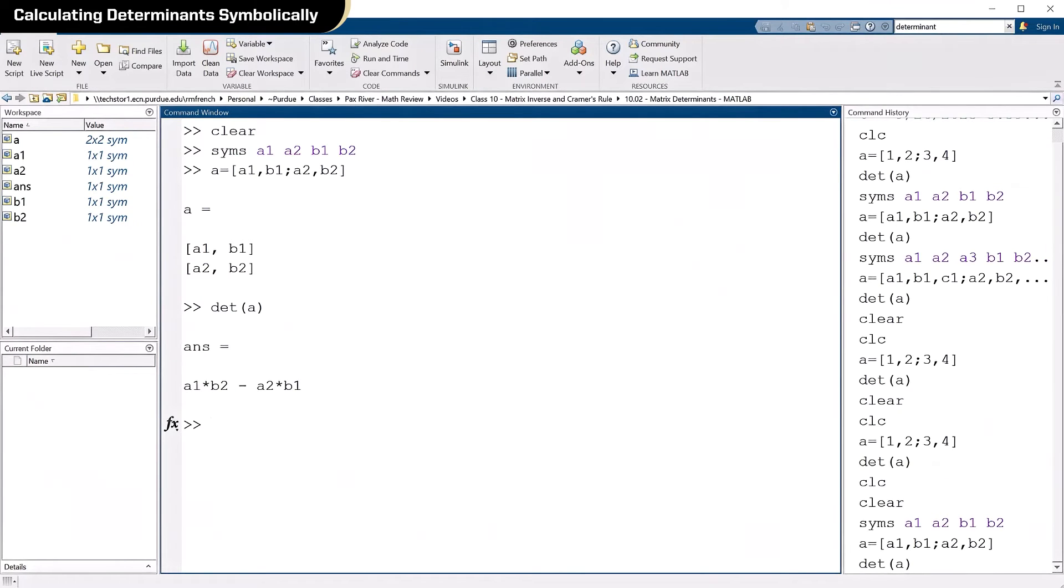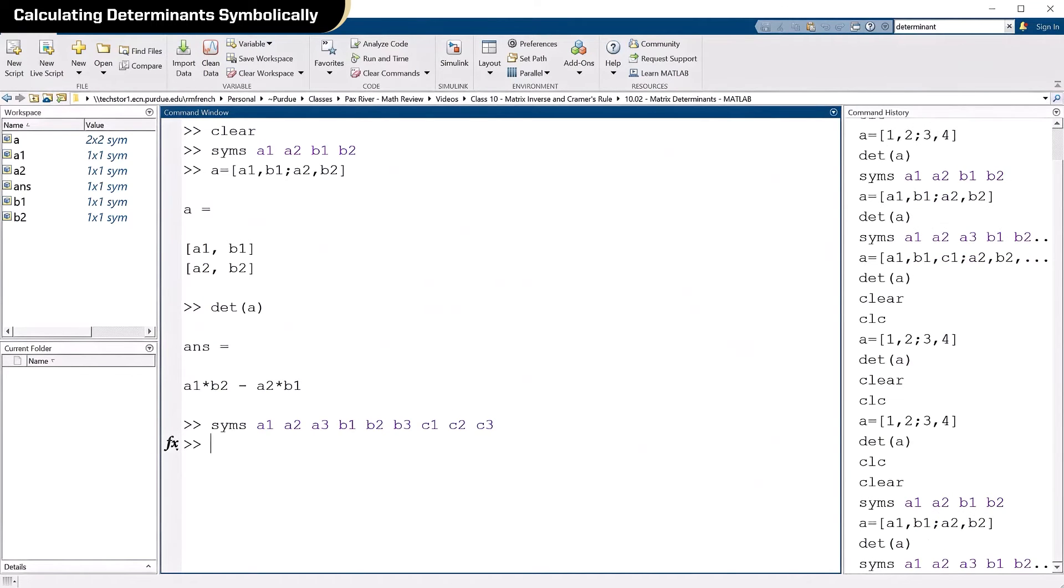Now, what happens when we go to three by three? I told you it's a little more involved. So let's pull up the syms command again. And this time, we're going to make three rows and three columns. There it is. There's the command right there. That makes a three by three matrix.